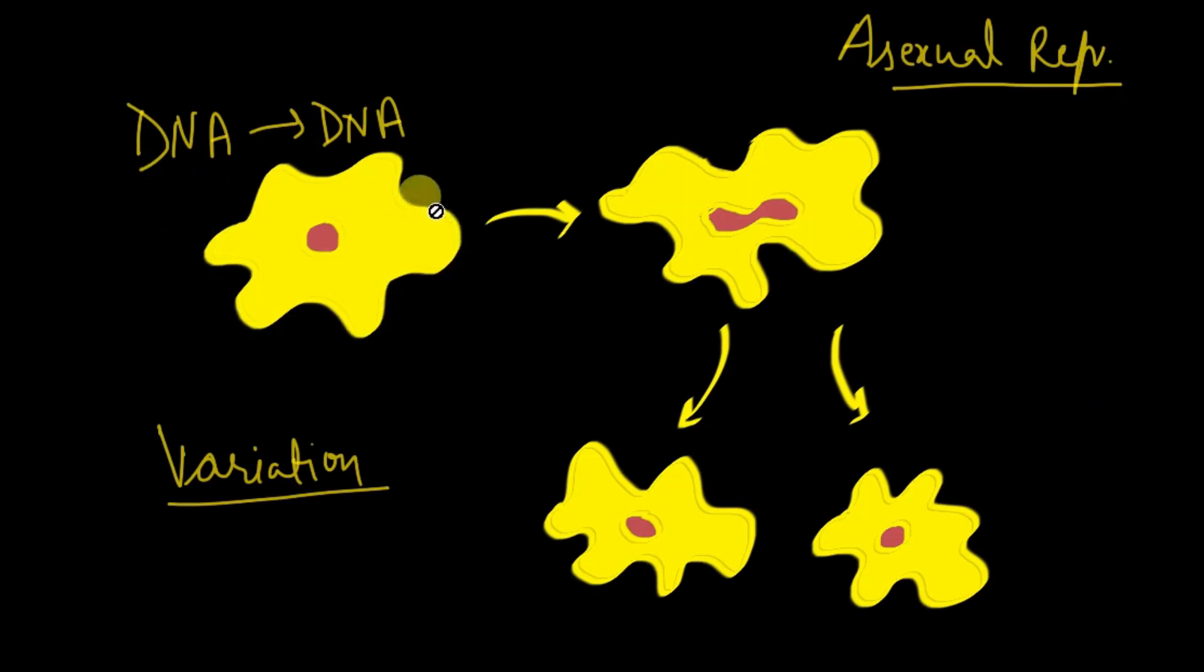We see this in amoeba, which undergoes asexual reproduction. DNA replicates, two copies are made. When two copies are made separate, the cellular apparatus also separates. Two individuals will be made separate because it is asexual. The DNA is copied as such, but in the replication, by chance, there is an error. So there are some variations.